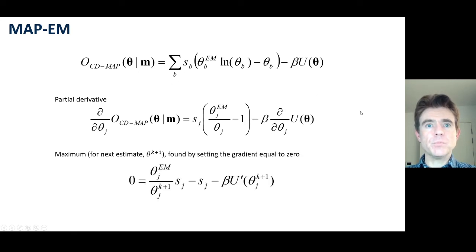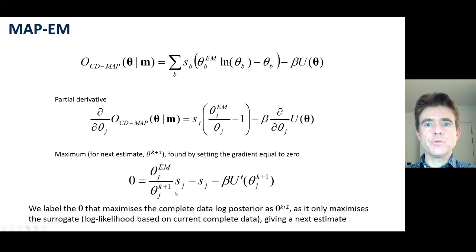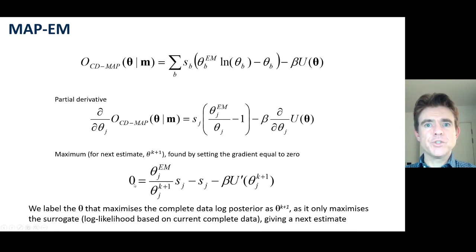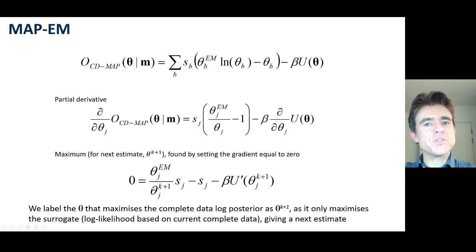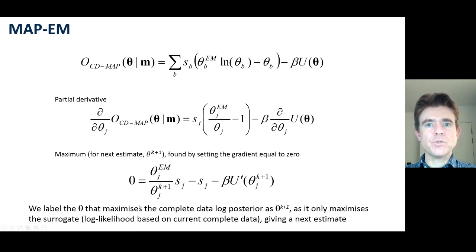To find the maximum, we set that equal to zero. The theta fulfilling that equation is our next estimate. The reason is that we are only operating on a current conditional expectation of the complete data, because we don't actually have it. So setting that to zero and solving only gives us a next better estimate heading towards the MAP estimate of theta.